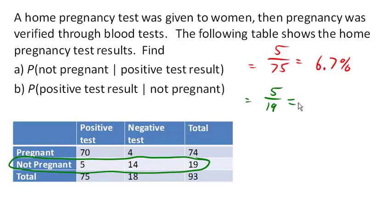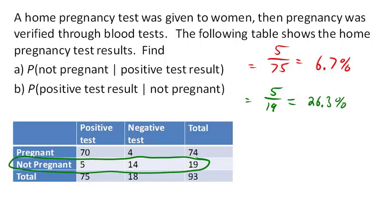Now let's look at the probability of a positive test result, given that they're not pregnant. There are 19 people who are not pregnant, and 5 of them have a positive test result — this is what's called a false positive, when somebody who doesn't actually have the condition gets a positive result anyway. This probability is about 26.3%. Even though this test has a 26% false positive rate, that is not the same probability as once you actually have a positive test result of whether or not you're actually pregnant. This basic idea holds true for pretty much all tests of disease, and it depends upon the incidence rate.